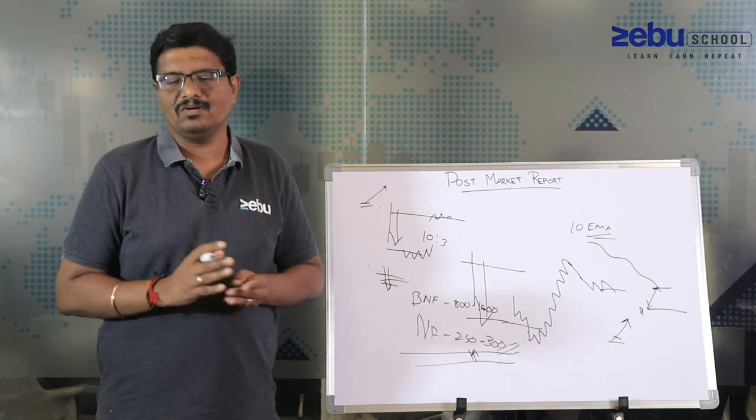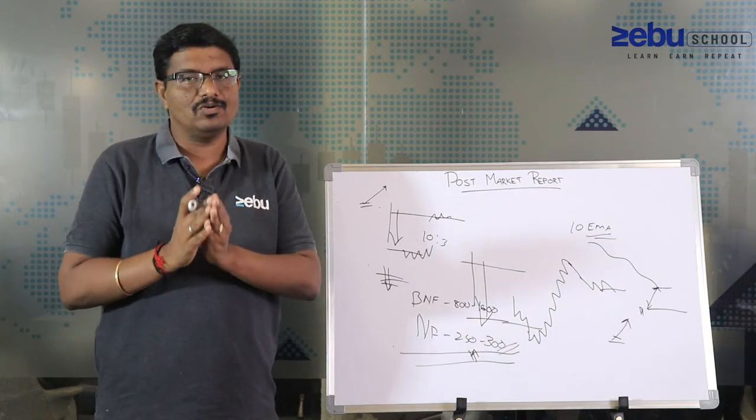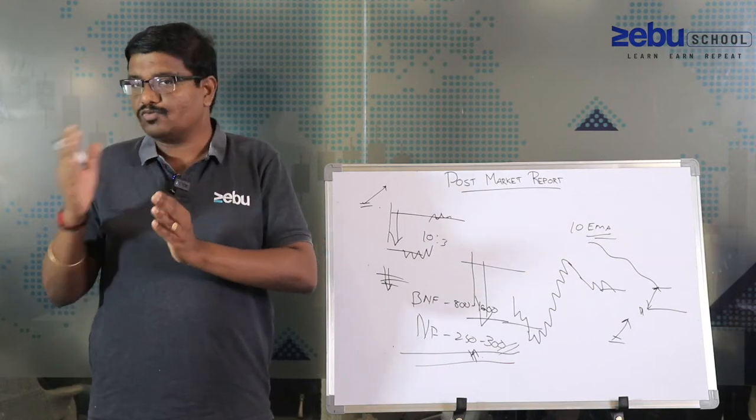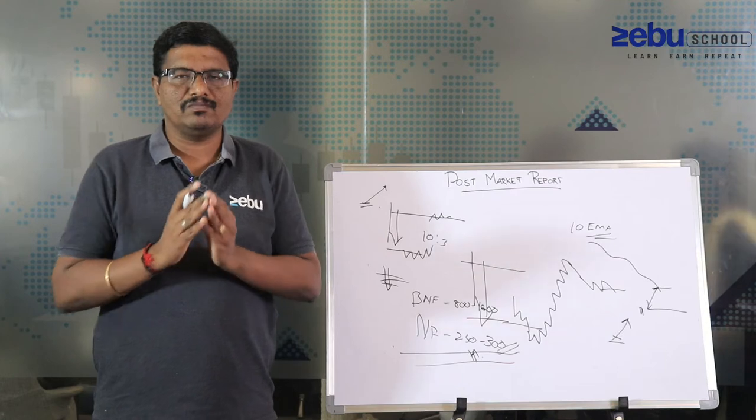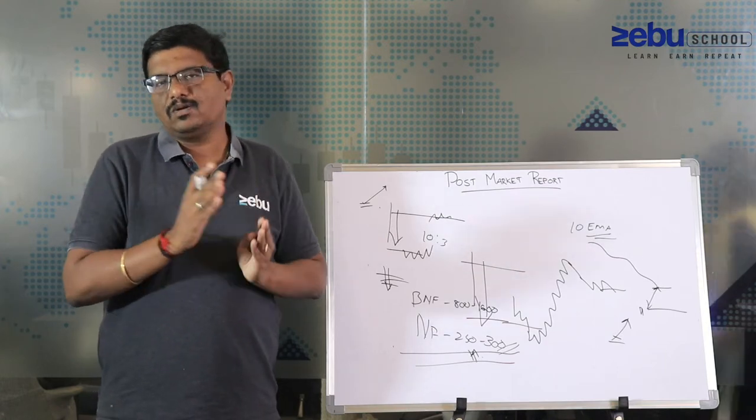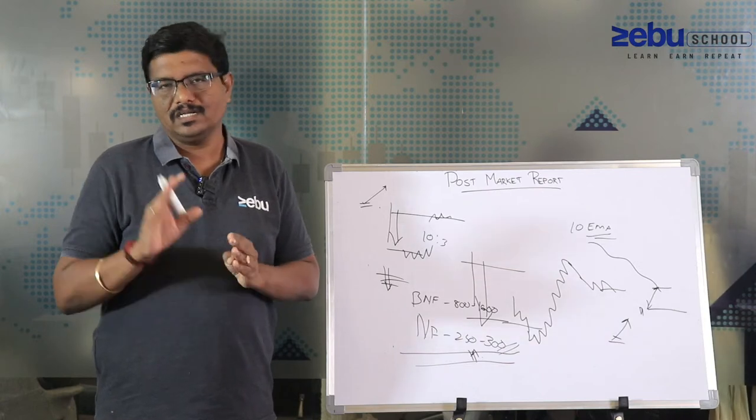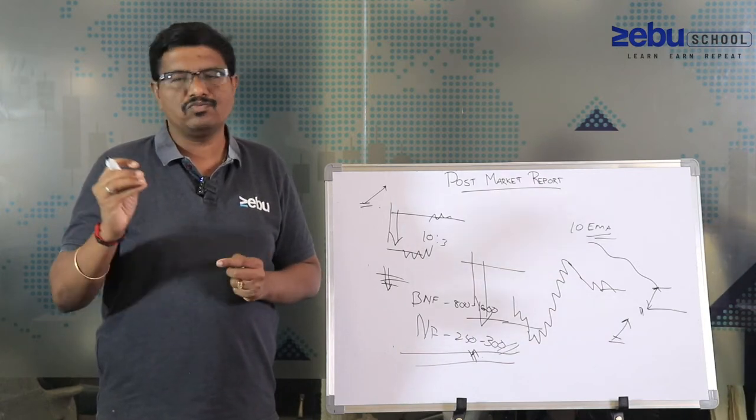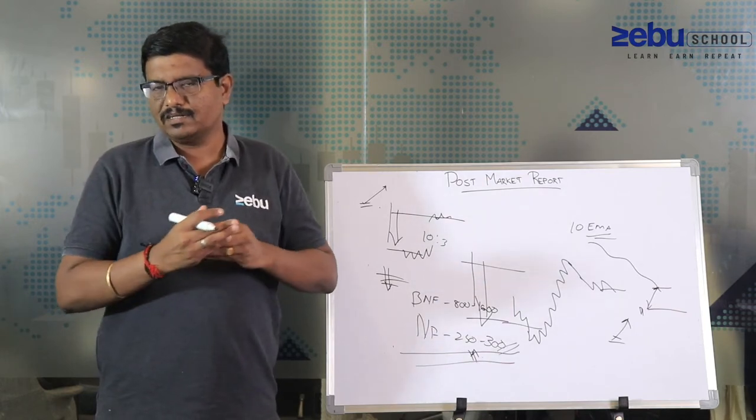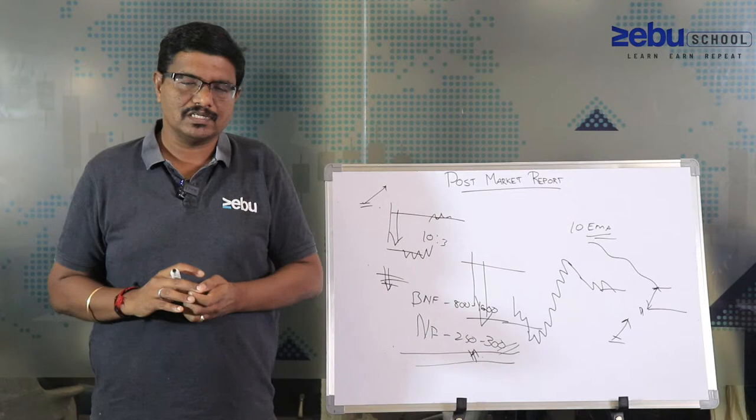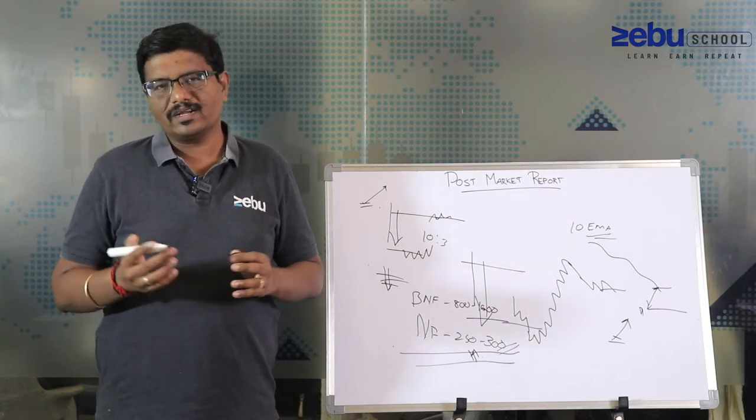Looking at the price action, I expect institutional data to show net inflow. On Friday I expected a flat day with inflow, but the actual number from FII and DII was net outflow of 2,500 crores. Based on price action, I'm expecting small outflow, less than 200 to 300 crores.